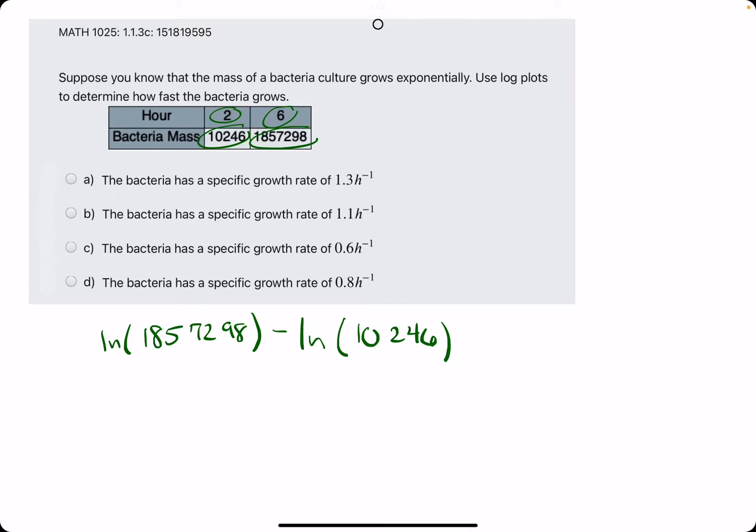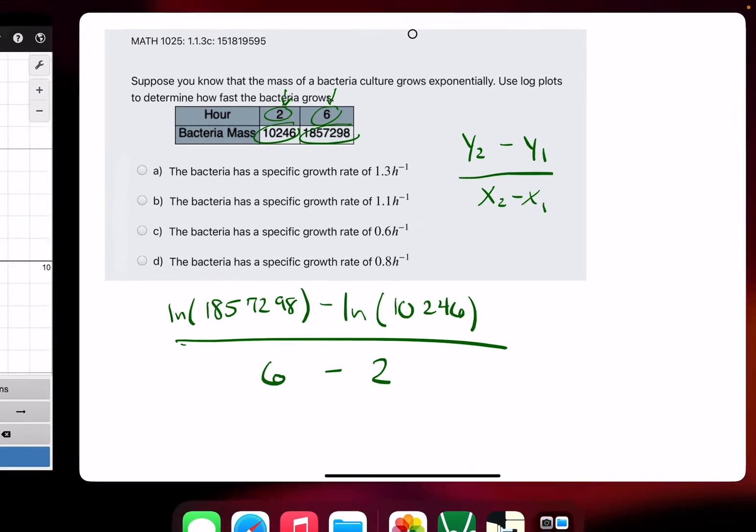We will subtract them because these are basically our new y2 and y1, and then we will divide it by x2 over x1, which is still just 6 and 2 respectively. So, we're subtracting our two time values, x2 minus x1,